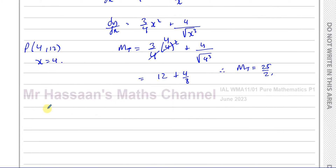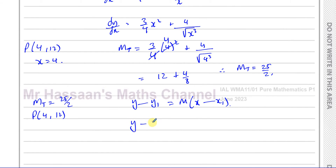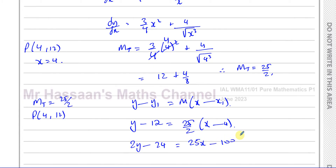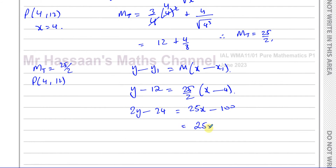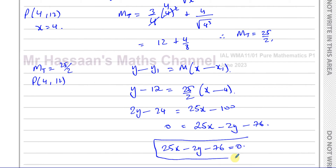Now we find the equation of the line. We know the gradient is 25 over 2 and it passes through P(4, 12). Using y minus y₁ equals m times x minus x₁: y minus 12 equals 25 over 2 times x minus 4. To get the form ax plus by plus c equals 0 and eliminate fractions, multiply both sides by 2: 2y minus 24 equals 25x minus 100. Rearranging with x term positive: 25x minus 2y minus 76 equals 0.